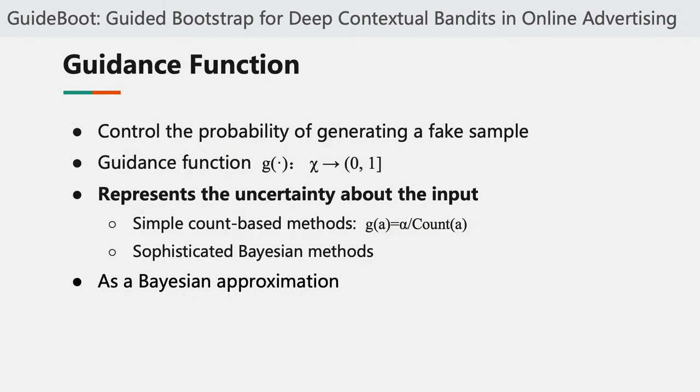The essence of the guidance function is that it represents the uncertainty about the input. For example, when we use a simple count-based method, we can define the guidance function as alpha divided by the visit count of the action. Similarly, we can also use sophisticated Bayesian methods such as Bayesian neural networks to provide the guidance function.